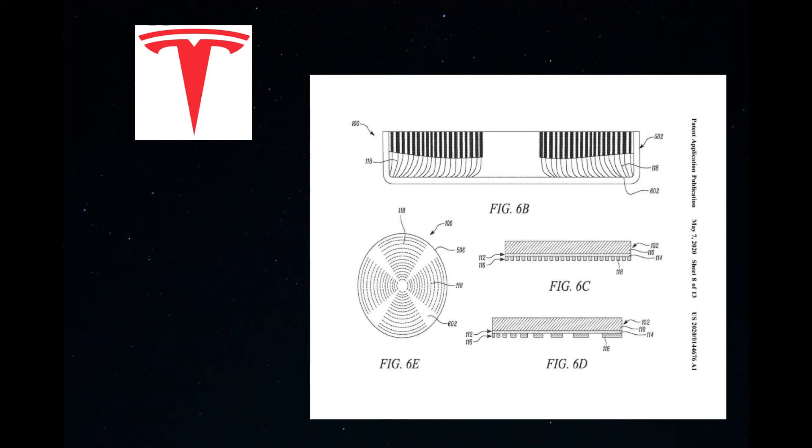The distance the current will travel will vary from one-half the length of the wound electrode if the tap is affixed at the electrode's midpoint to the entire length of the electrode if the tap is affixed at either end.